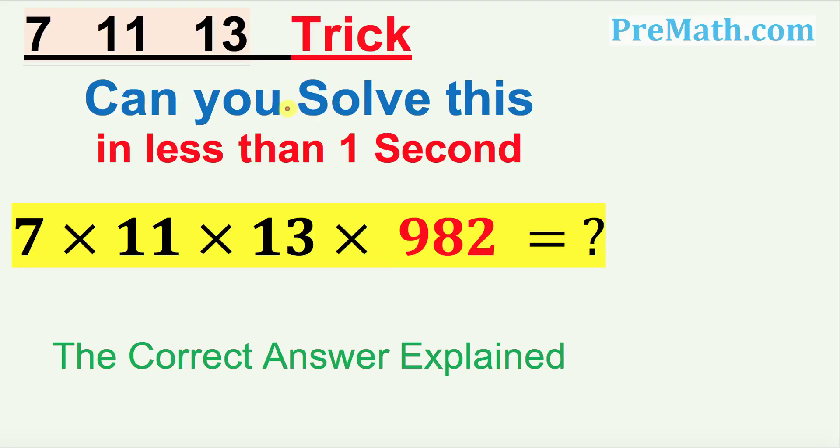Hello again everyone, in this video tutorial we are going to talk about a very famous math trick. Can you give me an answer to this problem in less than one second? So what is the problem? 7 times 11 times 13, we are asked to multiply this with any three-digit number, which is 982.